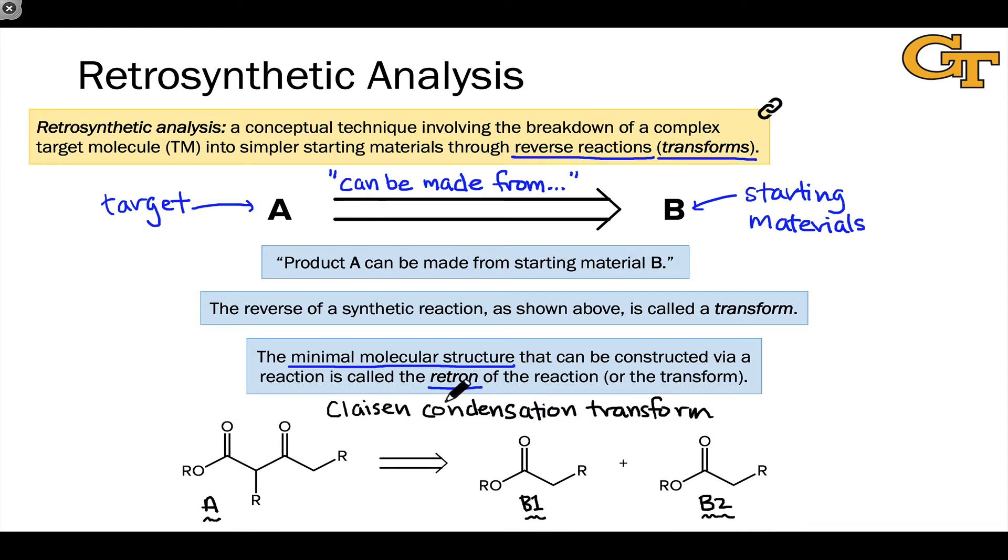What is the retron of the Claisen condensation transform? Well, it's this structure within the target that we can create through a Claisen condensation between the starting materials B1 and B2. And if we really focus on what happens here, what's happening is the formation of a new bond right here and departure of one of the alkoxy groups in either B1 or B2. Of course, the substrates are identical in this particular case.